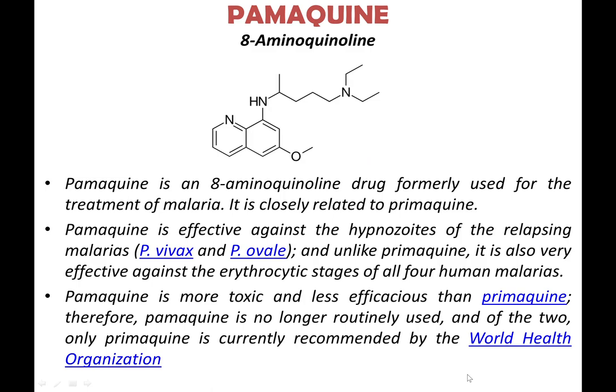Pamaquine is another 8-aminoquinoline, very closely related to primaquine, and was used alongside primaquine particularly against the relapsing hypnozoites of vivax and ovale. It is also found to be effective against the erythrocytic stages. However, because of its greater toxicity and lesser efficiency against the liver or exoerythrocytic stages, it is no longer used, and primaquine is the drug of choice according to the WHO.